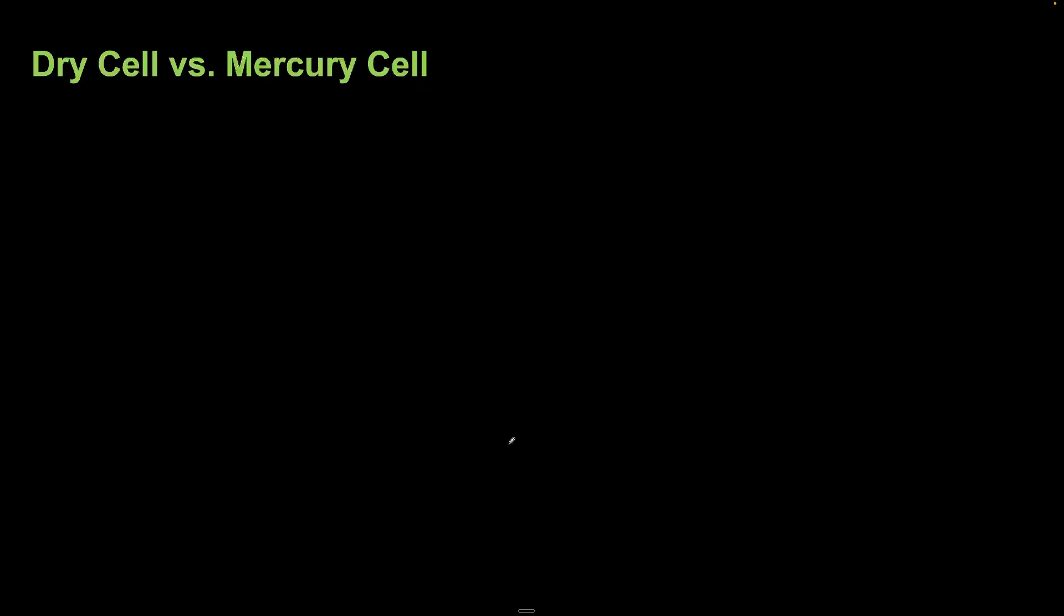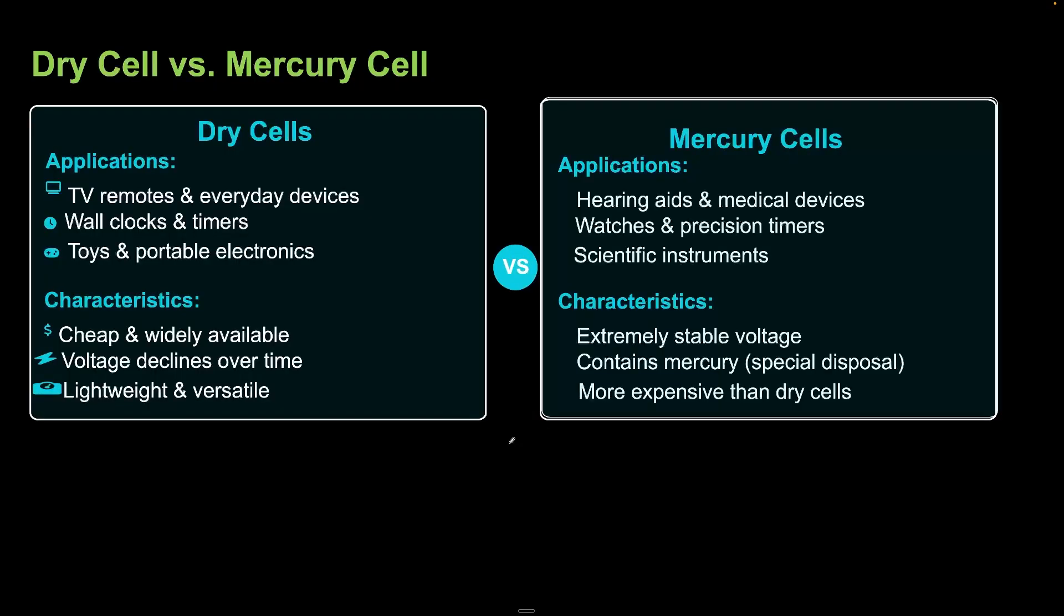Comparing dry cell to mercury cell: dry cells are used in TV remotes and everyday devices, wall clocks and timers, toys and portable electronics. Their characteristics are: cheap and widely available, voltage declines over time, and they are lightweight and versatile.